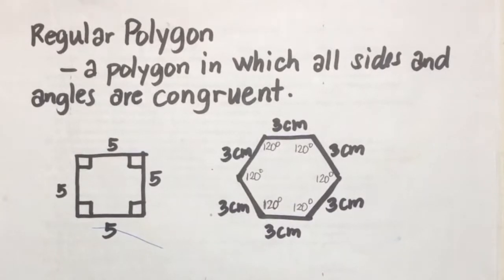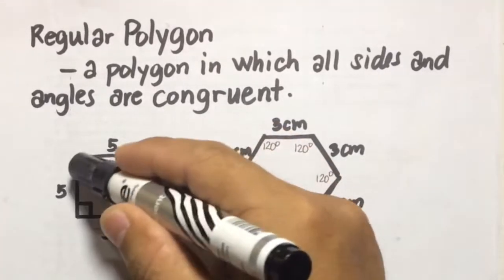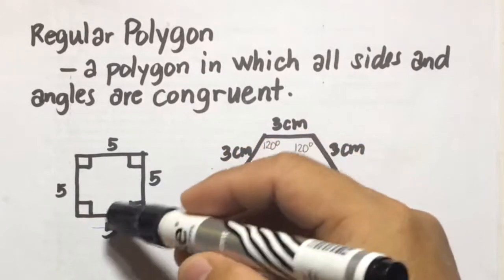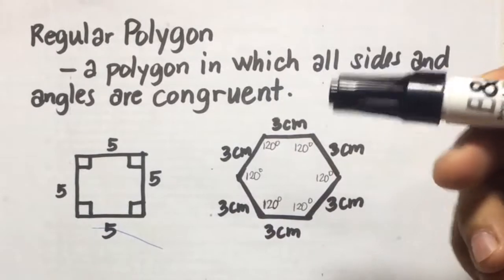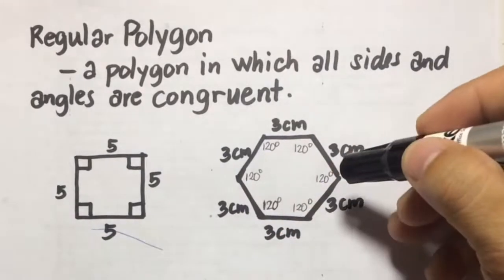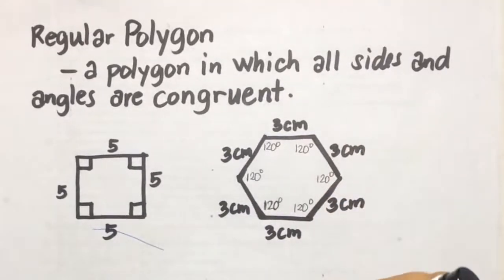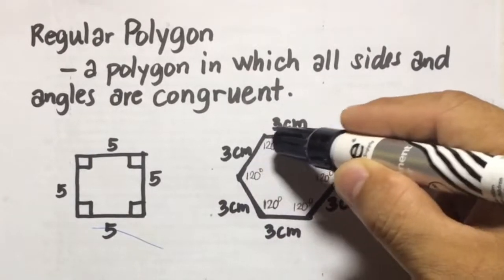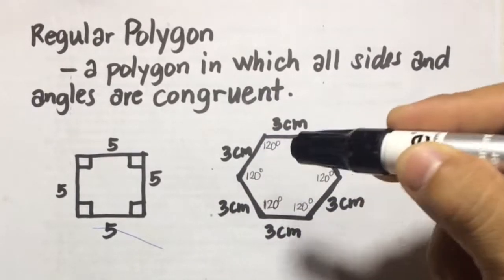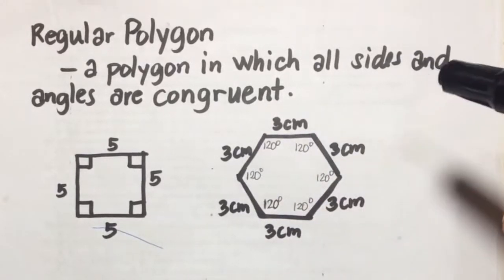We can illustrate regular polygons using illustrations here. A square has all angles congruent and all sides congruent, so a square is an example of a regular polygon. Another example is a regular hexagon where all sides measure 3 centimeters and all angles measure 120 degrees. This is what is meant by regular polygons.